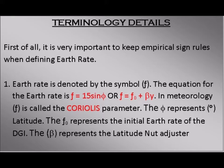Terminology details. It is very important to keep empirical sign rules when defining earth rate. Point 1: Earth rate is denoted by the symbol F. The equation for the earth rate is: F equals 15 sin φ, or F equals F₀ plus βy — in which F is called the Coriolis parameter, φ represents degree of latitude, and F₀ represents the initial earth rate of the DI.